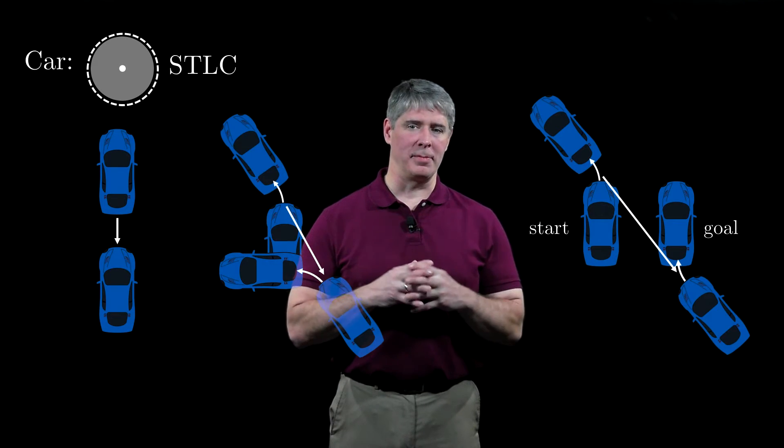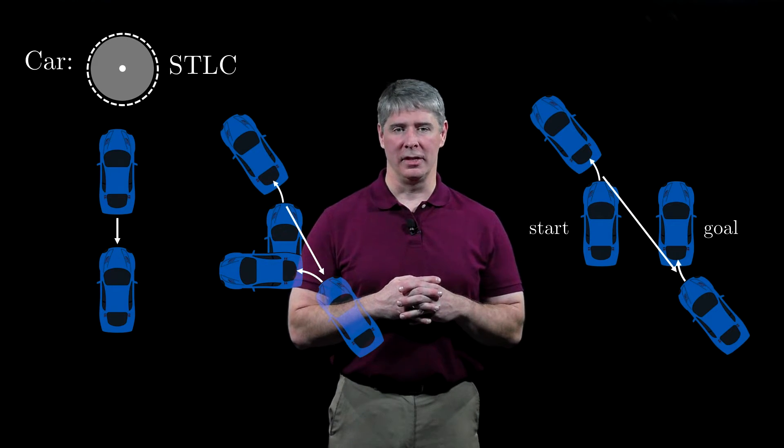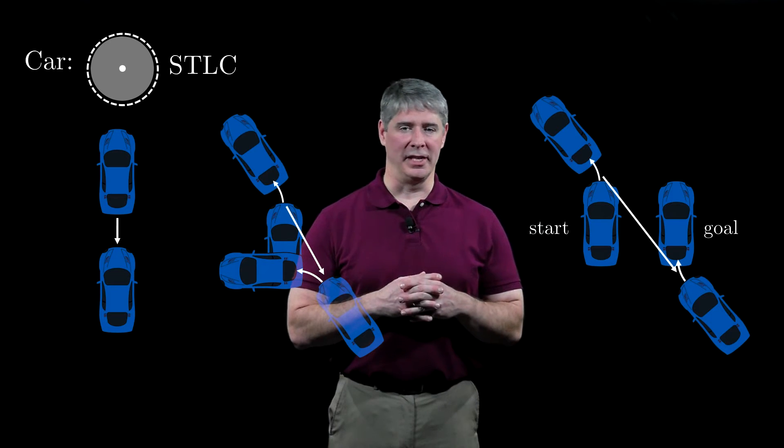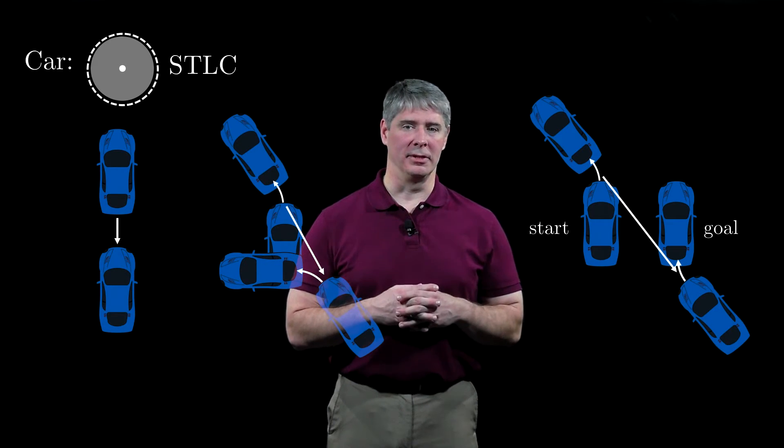No matter how much you shrink the neighborhood the car is allowed to maneuver in, it can still achieve motion in any direction without leaving the neighborhood. Technically, to satisfy the small-time condition, it must take zero time to switch between the forward and reverse gears, but we won't model the switching time. We're more concerned with the spatial aspect of STLC.